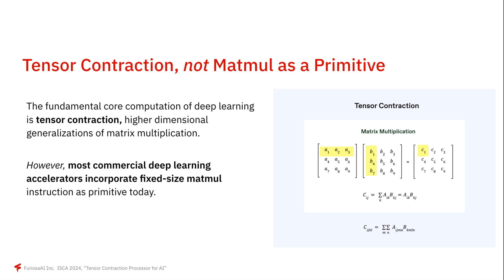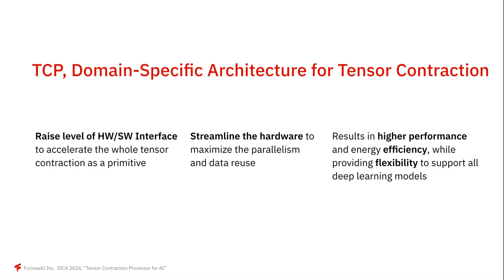You can think of tensor contraction as a multidimensional version of matrix multiplication. When we talk about matrix multiplication, it is a tensor contraction of ranked tensors. However, most commercial deep learning accelerators use fixed-size memory instructions as their primitive. We are proposing a domain-specific architecture for deep learning. Instead of using memory instructions as primitive, we want to raise the hardware-software interface to accelerate whole tensor contraction as primitive. By doing this, we can streamline hardware, leading to higher performance and better energy efficiency, while providing enough flexibility to support all deep learning models.